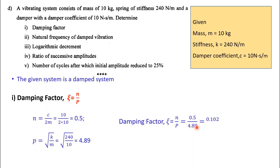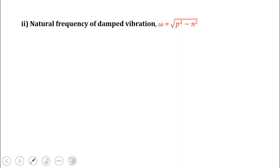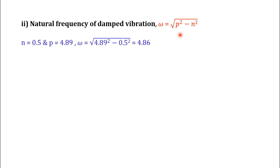The second part is the natural frequency of damped vibration. Note: for undamped vibration it is (1/2π)√(k/m), but for damped vibration the natural frequency is ω_d = √(p² − n²). Substituting the values of p and n, we get the answer as approximately 4.86 rad/s.